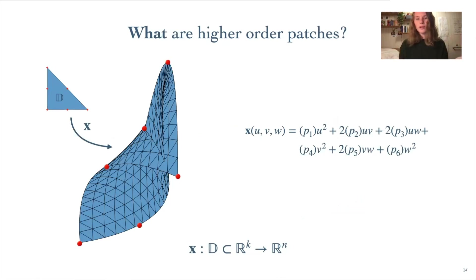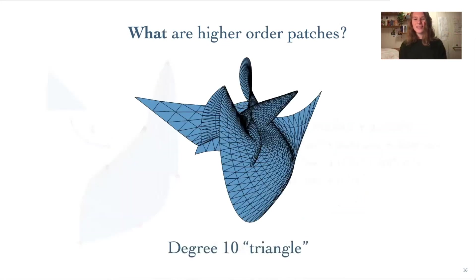This map is represented as a polynomial in the coordinates of our base domain, but also depending on the control points of our patch. The degree of this polynomial is what we call the degree of our patch. And so in this example here, we're looking at a degree 2 patch. And as you increase this degree, you can get some really crazy patches, like this degree 10 triangle that you see here.